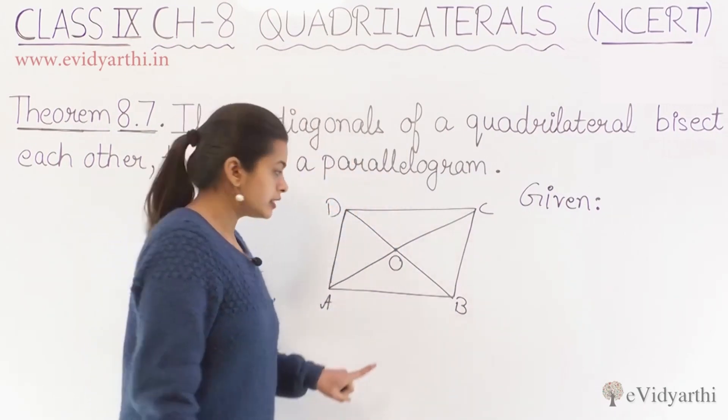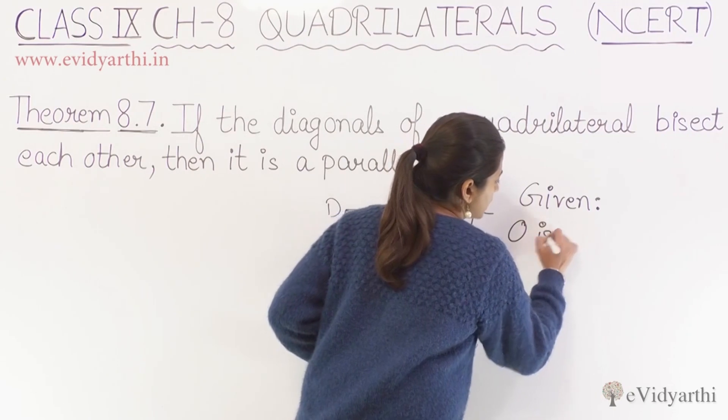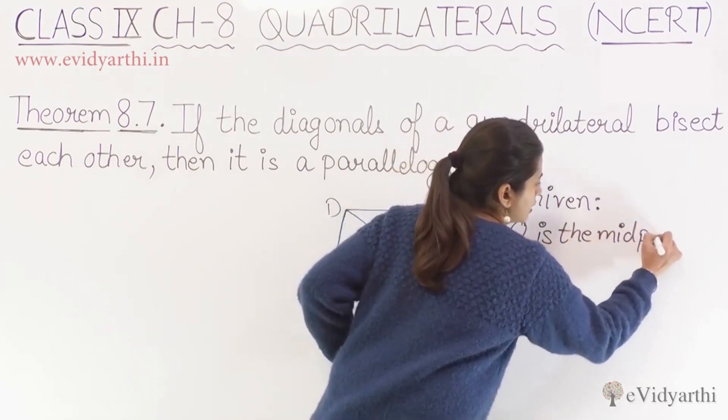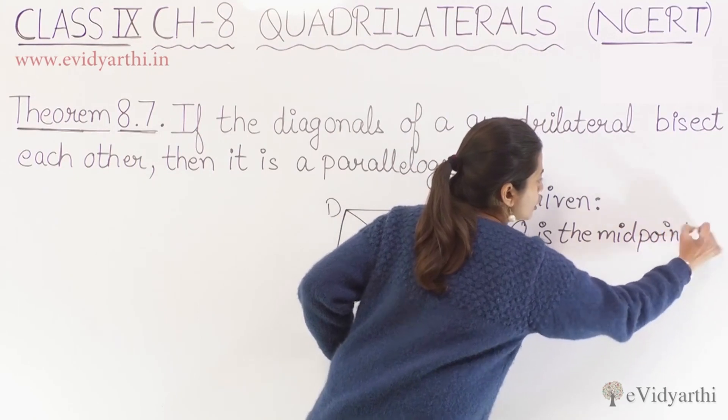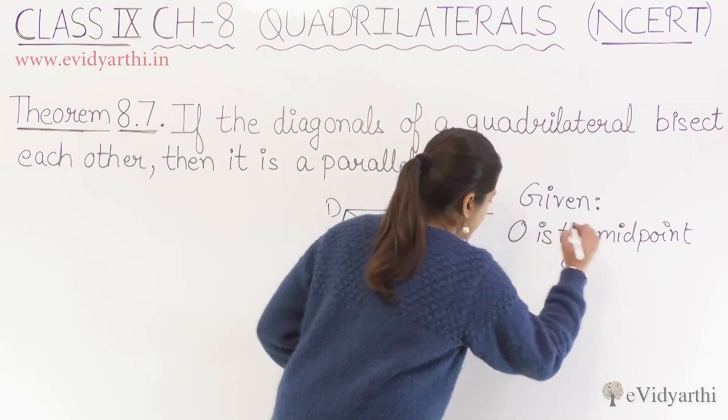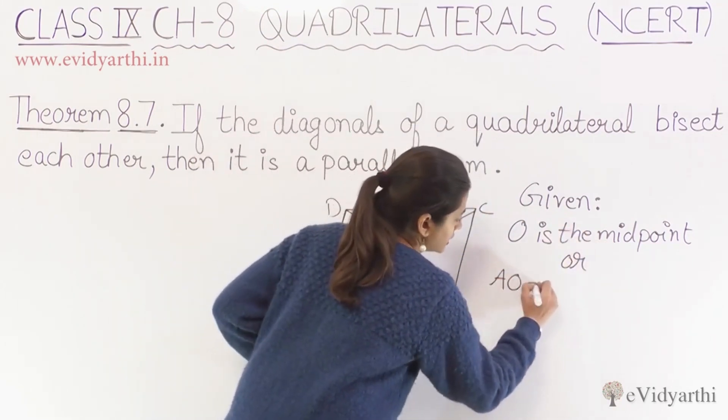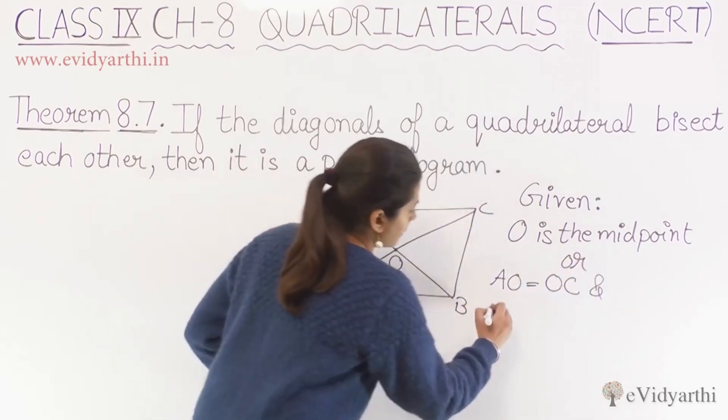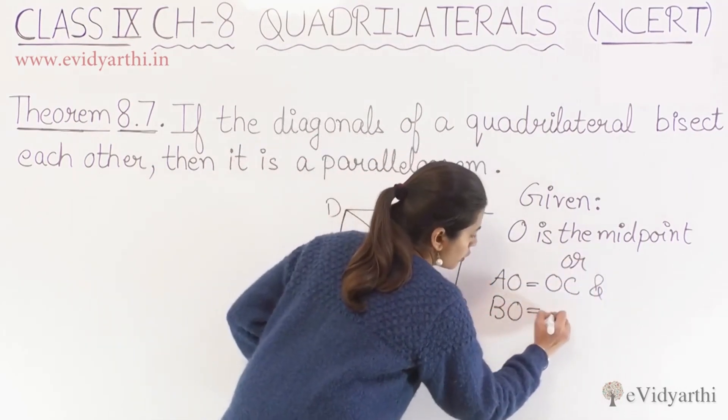From bisecting, what can we say? Actually, it's given that O is the midpoint of both the diagonals. Or we can say it's given that AO equals OC and BO equals OD.